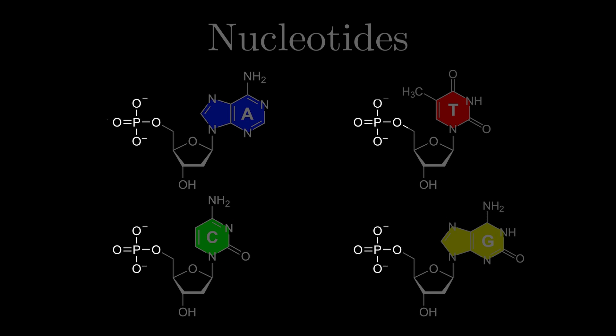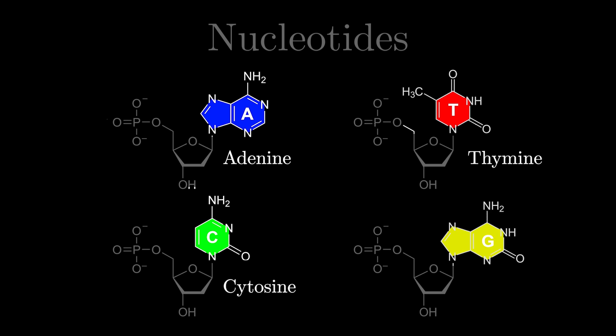Notice how the sugars and phosphate groups are identical in the four different nucleotides, but the nitrogenous bases are unique. The names of the nitrogenous bases are adenine, thymine, cytosine, and guanine.